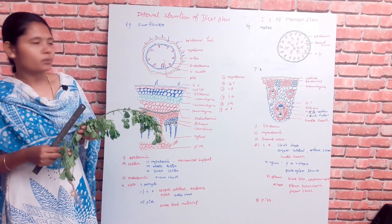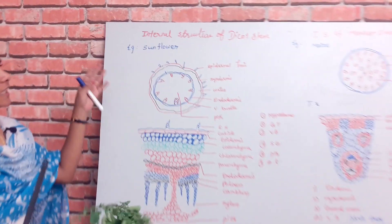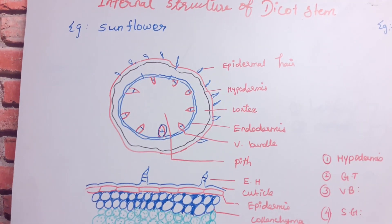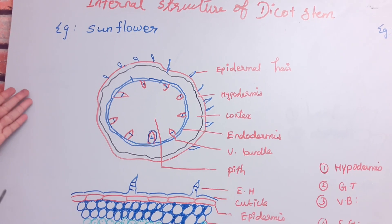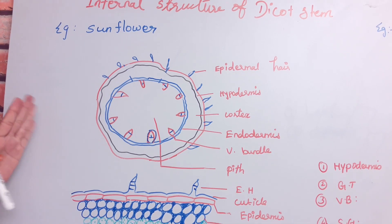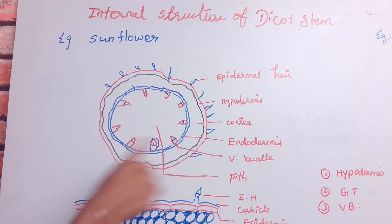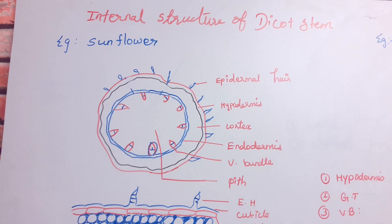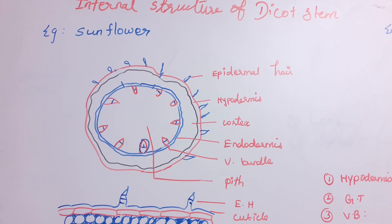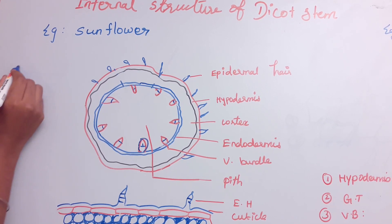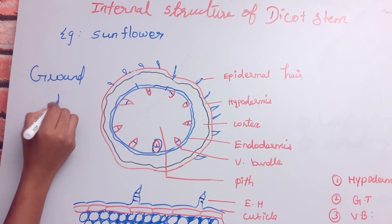Let's look at the video. First, the entire structure of the dicot stem. In the dicot stem, the example is sunflower. How does the sunflower look? This is the ground plan. The plant stem is cut to show the transverse section.